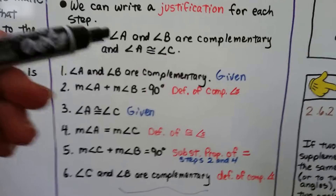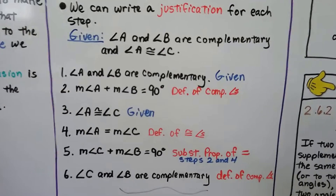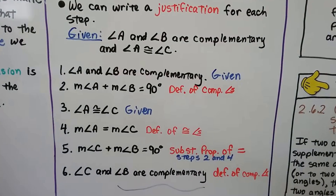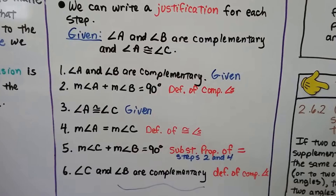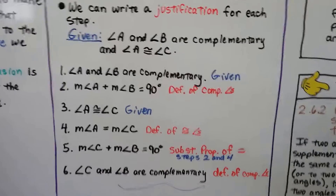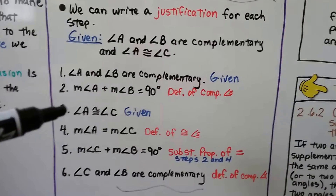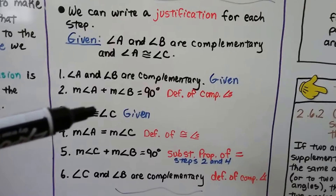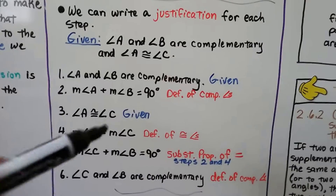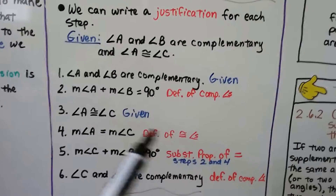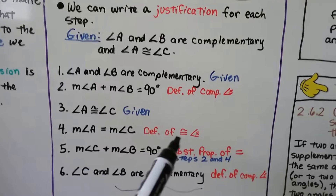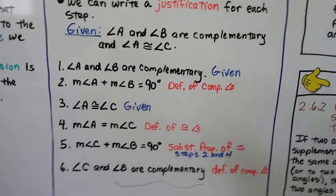For the abbreviations, I didn't have to write the whole thing out in longhand — I just wrote 'def. of comp. ∠s': definition of complementary angles. Our third statement is angle A is congruent to angle C — that's given, the second part of our given. Our fourth statement is the measure of angle A equals the measure of angle C. Angle A is congruent to angle C, and the definition of congruent angles is that they are equal to each other, so that's our justification.